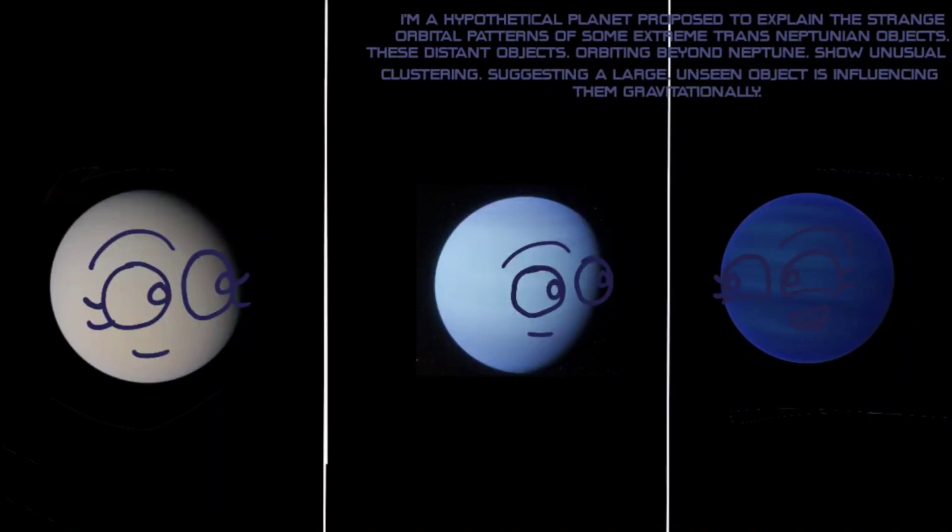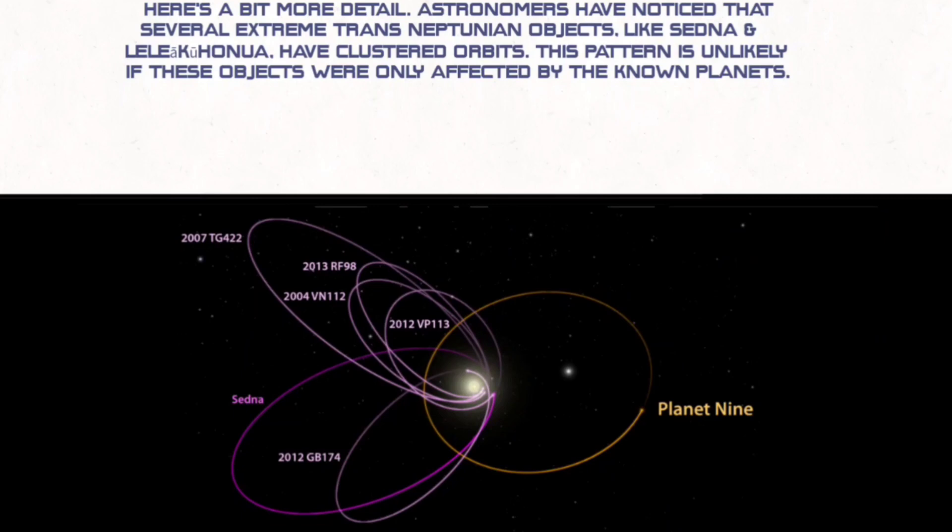I'm a hypothetical planet proposed to explain the strange orbital patterns of some extreme trans-Neptunian objects. These distant objects orbiting beyond Neptune show unusual clustering, suggesting a large unseen object is influencing them gravitationally. Here's a bit more detail.